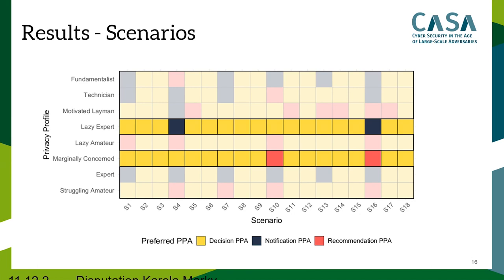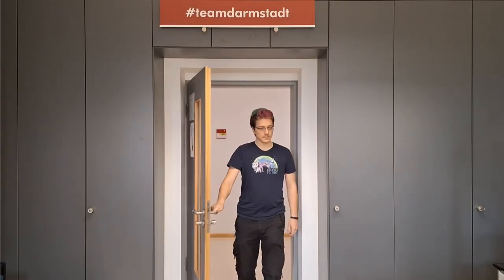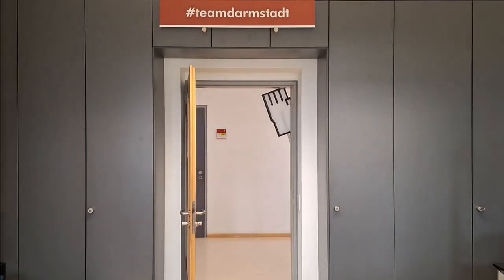To sum up: users tend to prefer autonomous PPAs, and privacy profiles are a step towards that. There is more research needed to investigate what kind of decisions users prefer to delegate, and we also have some results on that in the paper, which is accessible through the QR code. Thanks for your attention — if you have any questions, here's my email address or drop me a message on Twitter. See you!